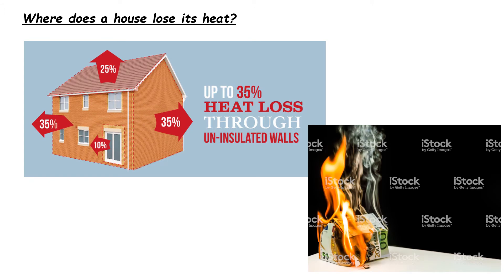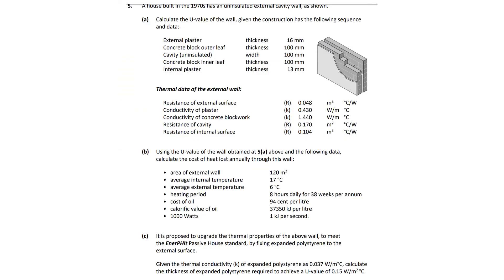We lose most of our heat in a building through the roof (about 25%), through the walls (about 35%), and the rest through windows and doors. It's effectively like burning money if we don't take these areas seriously, and it's also more harmful for the environment if we don't improve the insulation values of our walls, roofs, windows, and doors.